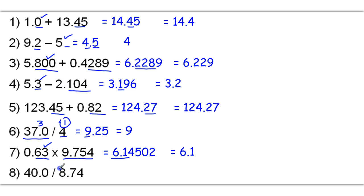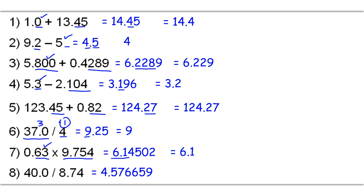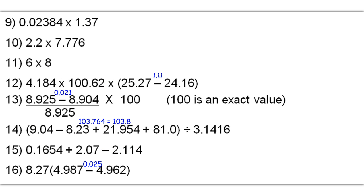40.0 divided by 8.74 gives me a raw answer of 4.576659. This number has 3 significant figures and this number has 3 significant figures, so 3 sig figs is what my answer should have as well. So we're going to round it off here — the 7 rounds up to an 8, giving me a final answer of 4.58.